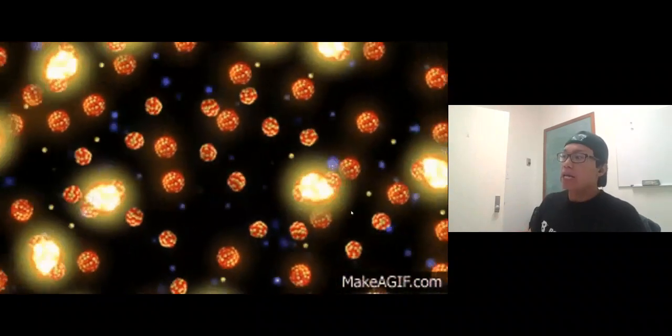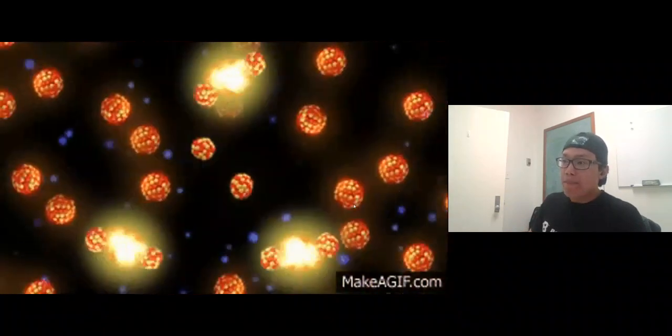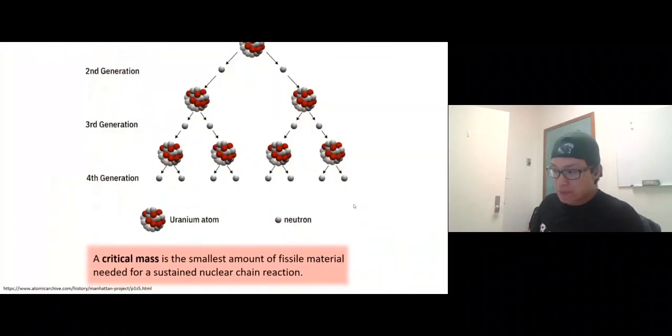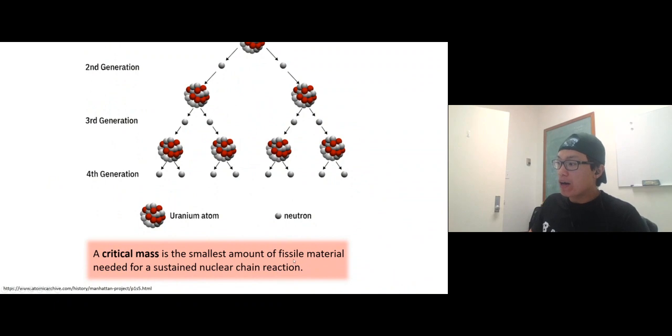The smallest mass that can keep fission self-sustained is called critical mass—the smallest amount of fissile material needed for sustained nuclear chain reaction. The critical mass of uranium-235 is 52.2 pounds or 56 kilograms, not a lot. The process becomes self-sustaining.